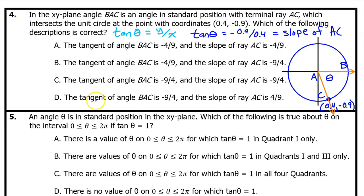So which one of these options matches what we just said? If you multiply the numerator and denominator by 10, you get negative 9 over 4. So the tangent is equal to negative 9 over 4, and the slope is given by the tangent. So that will also be negative 9 over 4. That's why the answer is C.